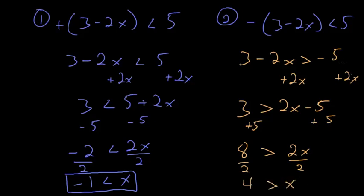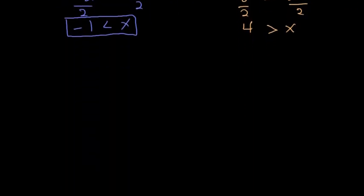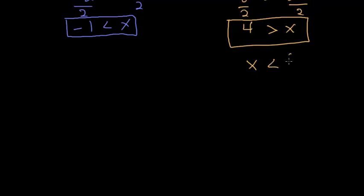Now that I have my two solutions I can combine them. Another way to think about this one is just the opposite, that x is less than 4. The way to combine these is fairly straightforward with x in the middle. We know that x is greater than negative 1 and it's less than 4.